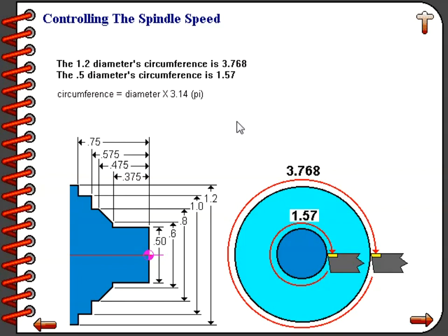Therefore, if the RPM remained constant, the speed of the material going past the tool would be 2.5 times greater at the 1.2-inch diameter than it would be at the half-inch diameter. In order to counteract this, what we need to do is alter the RPM depending on the diameter that we are cutting.